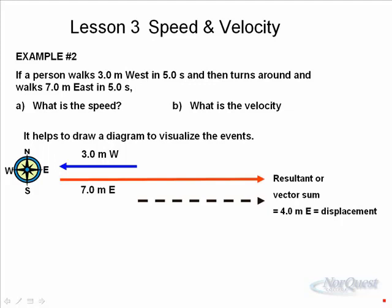The vector sum of these two vectors, three meters west and seven meters east, is only four meters east.